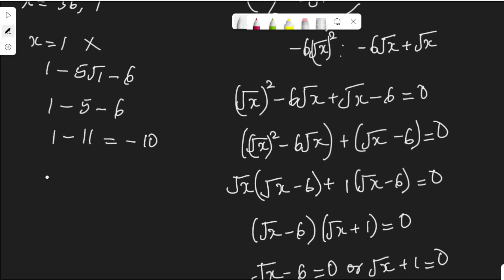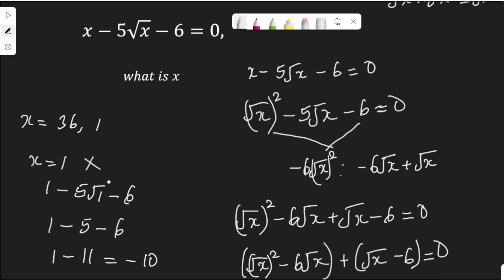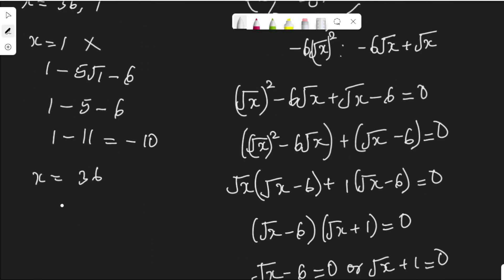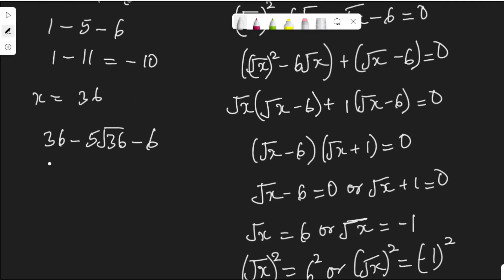Now let's check for s equal to 36. When s equal to 36, that will be 36 minus 5 root 36 minus 6. Let's check whether we get zero. That will be 36 minus 5. The square root of 36 is 6, then minus 6, which is 36 minus 5 times 6 is 30 minus 6, which is 36 minus 30 minus 6 is minus 36. 36 minus 36 is zero. That means this is the only solution for that equation.